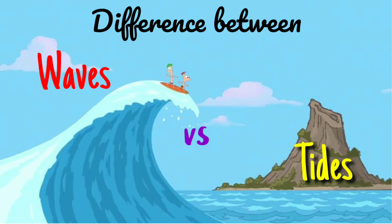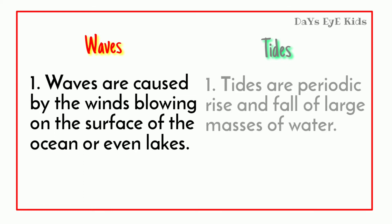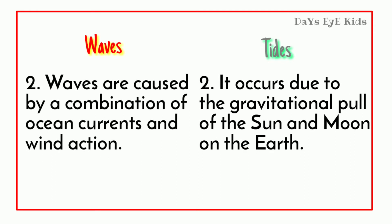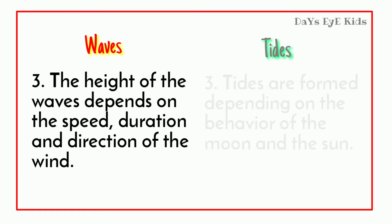The difference between waves and tides: waves are caused by the winds blowing on the surface of the ocean or even lakes. Tides are the periodic rise and fall of large masses of water. Waves are caused by a combination of ocean currents and wind action. Tides occur due to the gravitational pull of the Sun and moon on the earth.